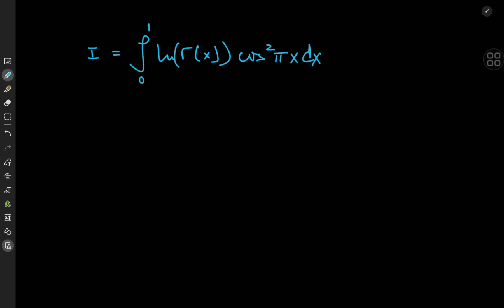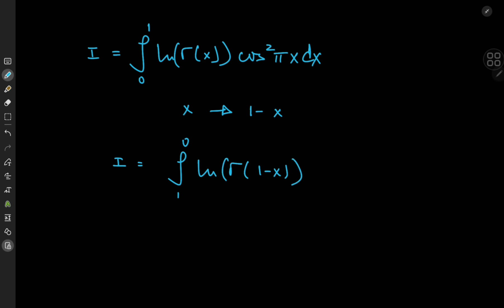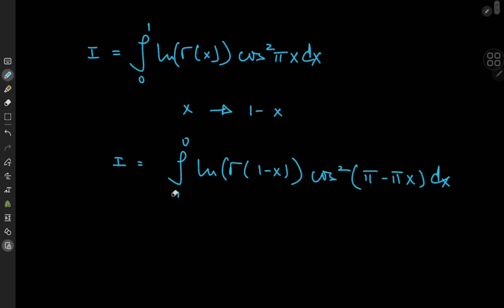I'd like to start off with the transformation of taking x to the 1 minus x realm. That gives me i equal to the integral from 1 to 0 of the natural logarithm of gamma of 1 minus x times the square of the cosine of pi minus pi times x. The differential element turns into negative dx, but we can get rid of the negative sign by switching up the limits of integration.